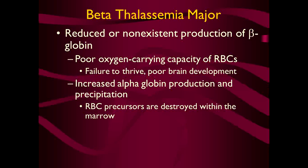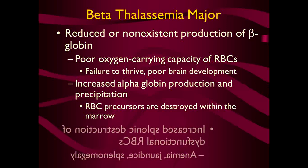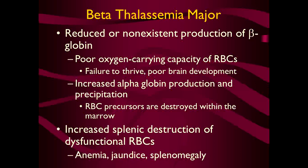In beta-thalassemia major, there is reduced or non-existent production of beta-globin chains. The oxygen-carrying capacity of the RBC is poor, the patient fails to thrive, and there is poor brain development. Alpha-globin chains increase in production and their precipitation results in destruction of RBCs and RBC precursors within the marrow. Increased splenic destruction of dysfunctional RBCs also occurs, and the patient presents clinically with anemia, jaundice, and splenomegaly.